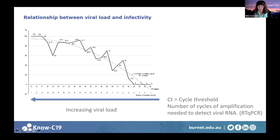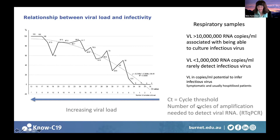This graph shows the relationship between viral load and infectivity using the cycle threshold (CT) — the number of cycles of amplification needed to detect viral RNA by PCR. The lower the CT value, the higher the viral load. As viral load increases, so does the probability of culturing infectious virus. A more accurate measure is converting CT to copies per millilitre using a calibration curve. Studies have shown that viral loads greater than 10 million RNA copies per mL are associated with culturing infectious virus, while loads below 1 million copies per mL rarely yield infectious virus.